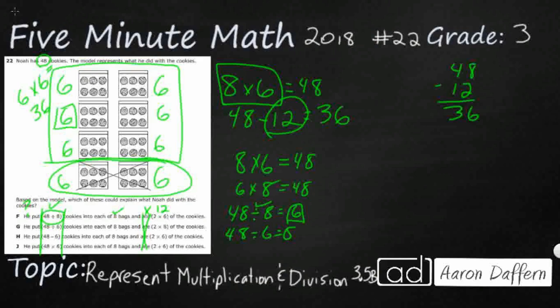Let's see what the next ones are. It says he put 48 divided by six cookies into each of eight bags. 48 divided by six is going to be eight. But he didn't put eight cookies into eight bags — he put six cookies into eight bags. This is really tricky because there are eight bags, but 48 divided by six is eight, as we learned right here.